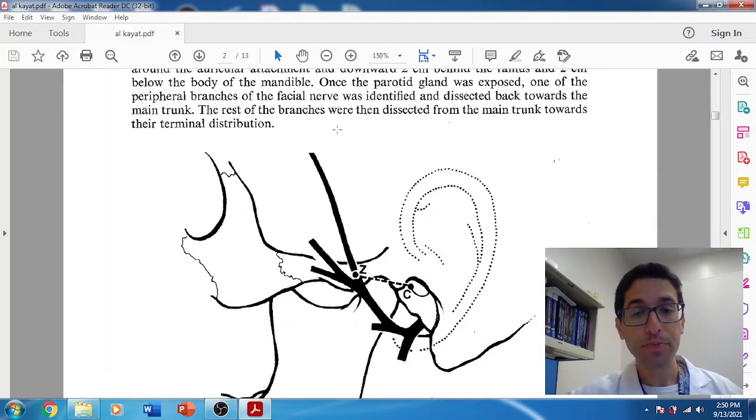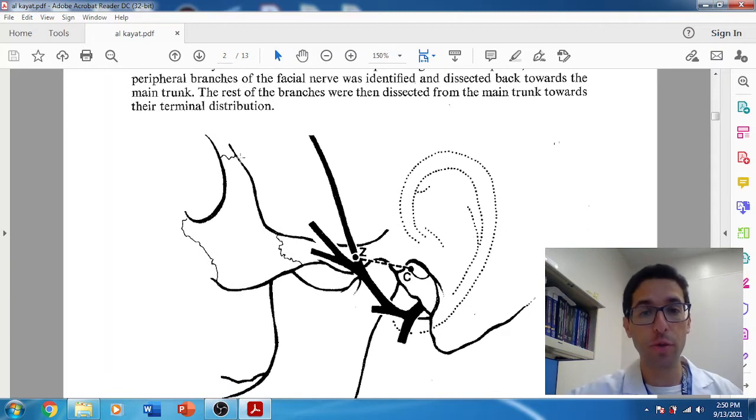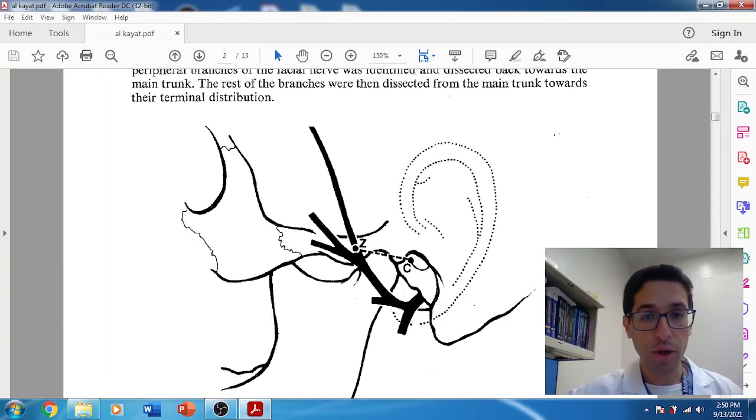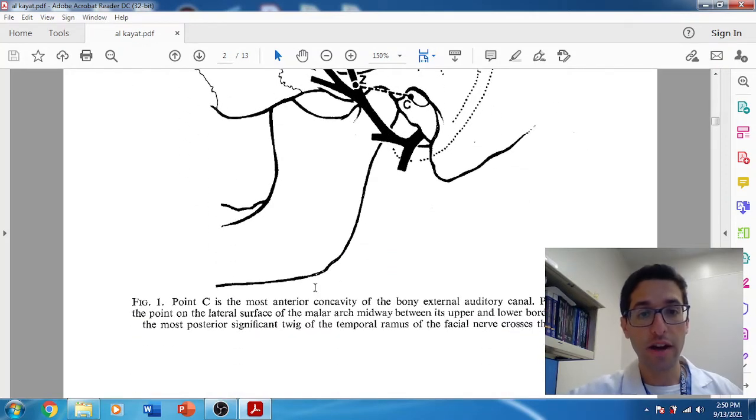What they used was the external auditory canal. And so here you see, this is the diagram showing you what their measurement was. It's from point C to point Z. Point C was the most anterior aspect of the bony external auditory canal, and point Z is where the facial nerve crosses over the zygomatic arch.